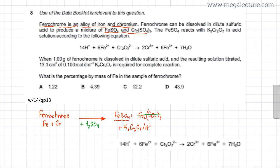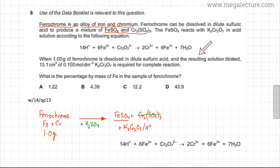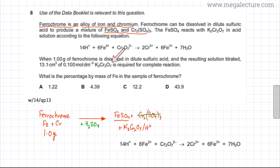The question states that 1 gram of ferrochrome is dissolved in dilute sulfuric acid and the resulting solution is titrated with K₂Cr₂O₇. We are told that only FeSO₄ reacts with K₂Cr₂O₇, not the chromium 3 sulfate. The volume required for complete reaction is 13.1 cm³ of 0.1 mol dm⁻³ potassium dichromate(VI).